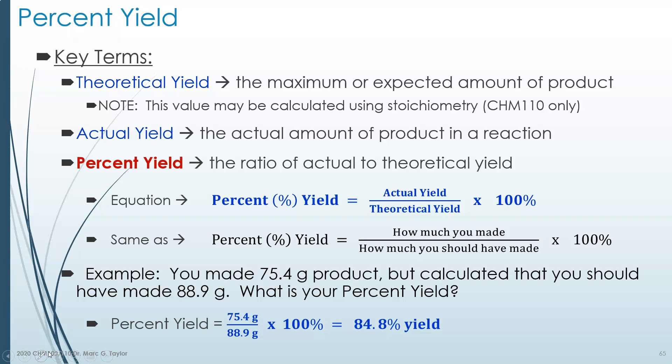There are all kinds of reasons for that. There are also reasons why you might get a percent yield that's greater than 100%. So how can you make more than the maximum you should be able to make? Well, it's not that you made it - it's only that you thought you made it.